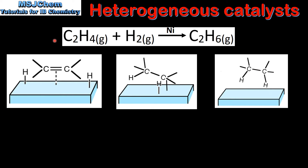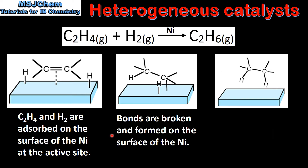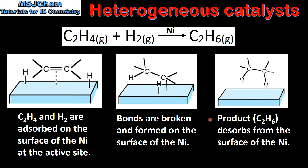Next we look at heterogeneous catalysts. In this reaction ethene reacts with hydrogen in the presence of a nickel catalyst to form ethane. The reactants are in the gaseous phase and the nickel catalyst is in the solid phase. To begin with, the ethene and hydrogen are adsorbed on the surface of the nickel at the active site. Next, bonds are broken and formed on the surface of the nickel. And finally the product, which is ethane, desorbs from the surface of the nickel.